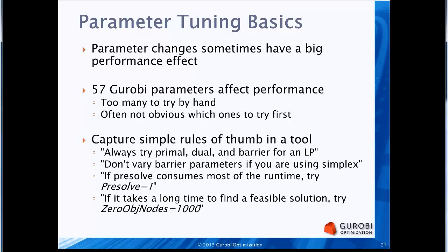Browsing the Gurobi documentation, I found 57 Gurobi parameters that can affect performance on your model. Clearly 57 is too many to try by hand. Even if you just want to try a few, it's typically not obvious which ones are going to be the best ones to try. So we've created a tool that allows you to explore different parameter settings for your model and find parameter settings that work well.